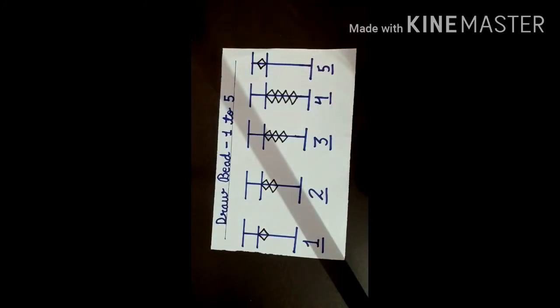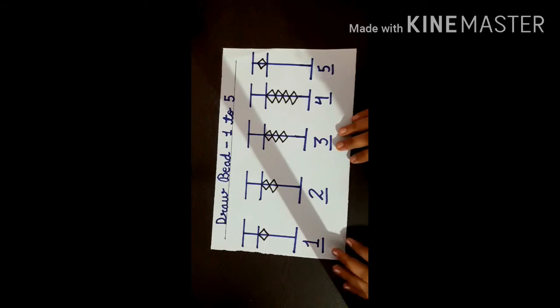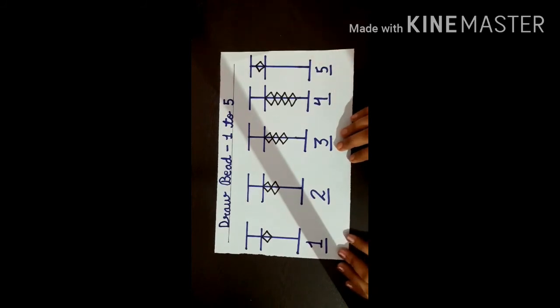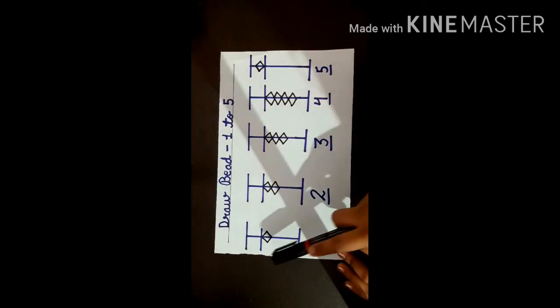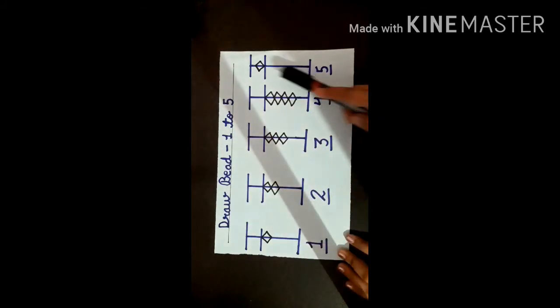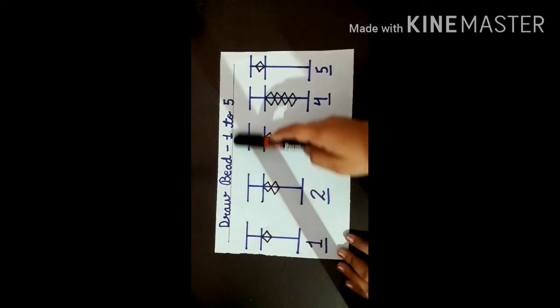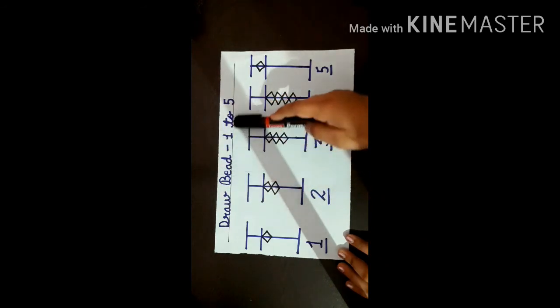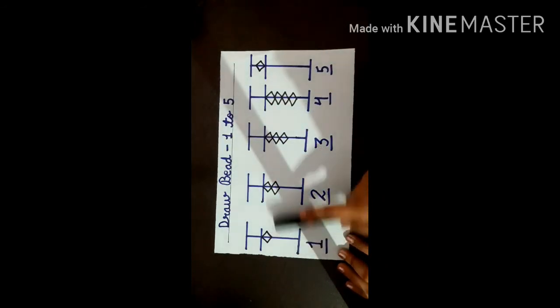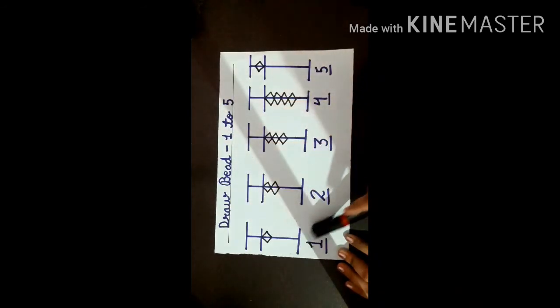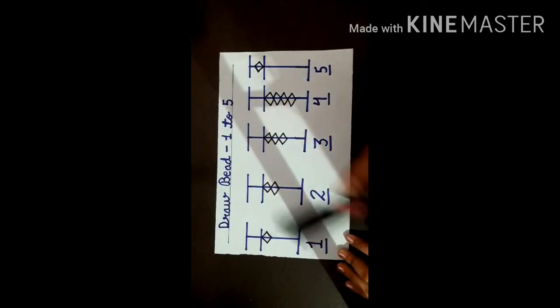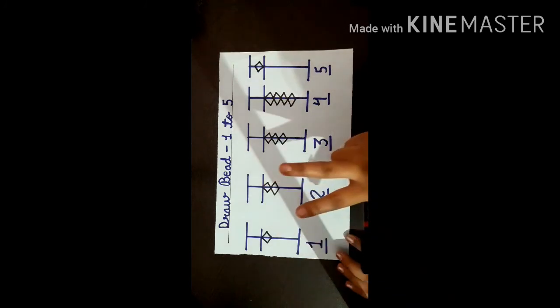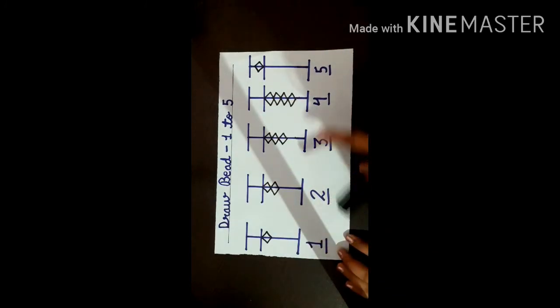Students, I have given you homework pdf with this video. You have to draw bead 1 to 5 like this. You have to put the heading draw bead 1 to 5. Then you have to draw this two times. Two times means first of all you will draw it, then again you have to draw. Means two times you have to draw each bead.